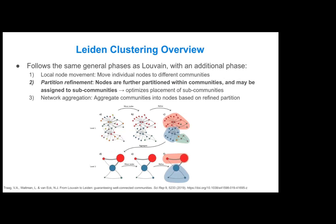The Leiden clustering algorithm follows the same general process as Louvain with an additional phase added in. You still start with each node in its own community and perform local node movement. But then the second phase is what they call partition refinement, where nodes are further partitioned within a community and assigned to sub-communities, optimizing the placement of those sub-communities.